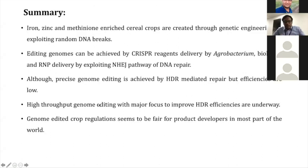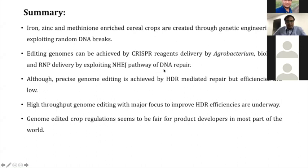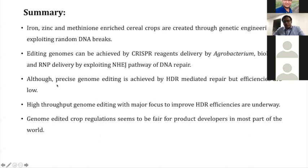In summary: first, we can create traits using random DNA breaks — those traits can be iron-, zinc-, or methionine-enriched cereal crops, or vitamin A-enriched crops. Second, we can edit genomes using agrobacterium, biolistics, and RNP delivery by exploiting the NHEJ pathway of DNA repair. But the key question is whether editing genomes using the NHEJ pathway is a wise approach. Third, we can perform precise genome editing with two- or three-nucleotide insertions incorporating sequence information.